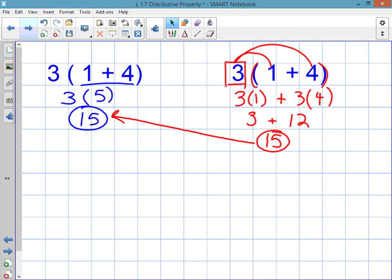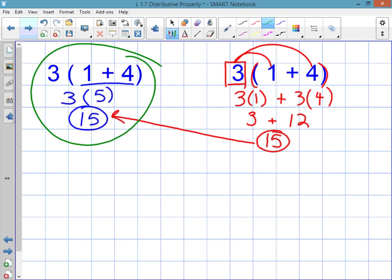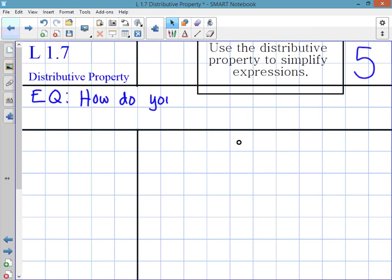Now, if I were you, I'd be asking myself the question, why would I ever want to do it this way when this way is so much easier? And the answer is you wouldn't do it this way because the other way is so much easier. But this is a demonstration of how the distributive property works. When do you use the distributive property? When you have an example like this one.